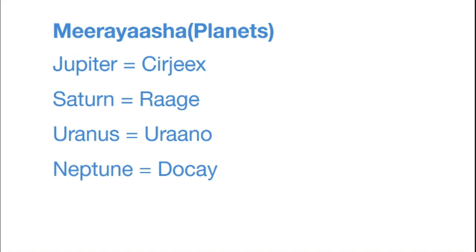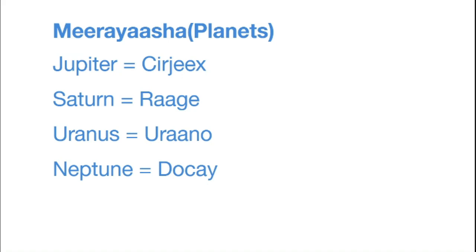Now let's go with the giant planets. Jupiter is irjah. Saturn is raga. Uranus is urano. And Neptune is du'i.